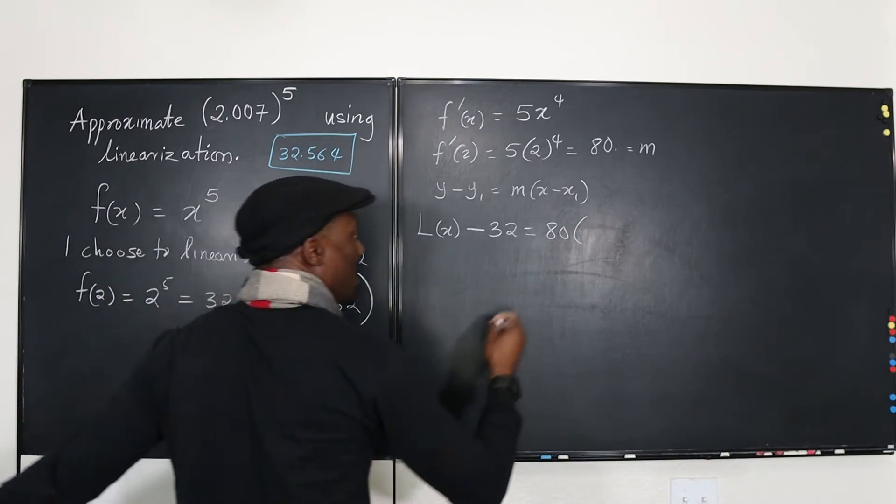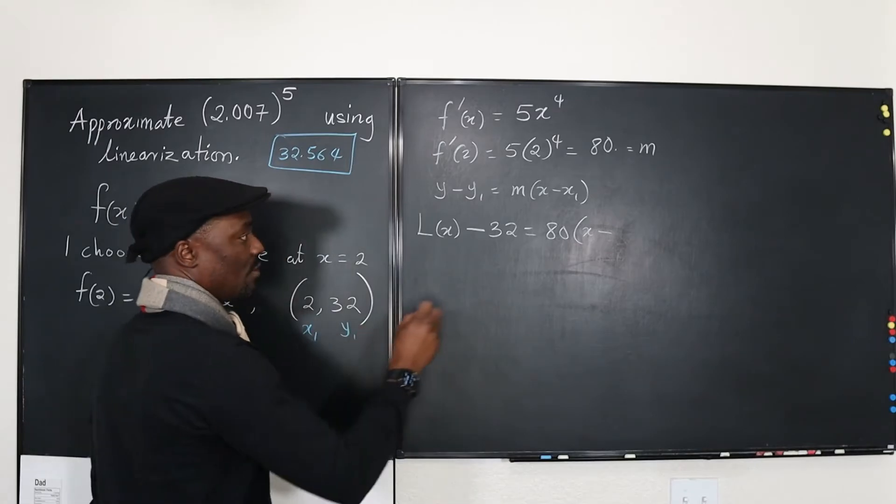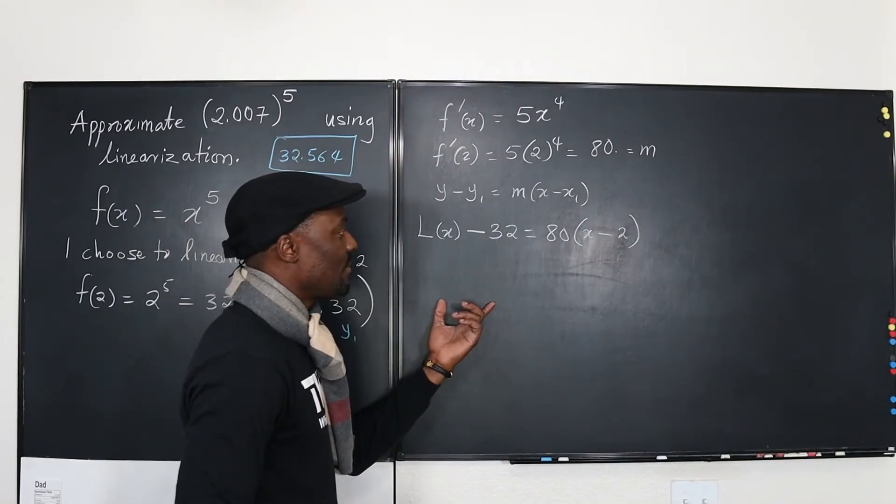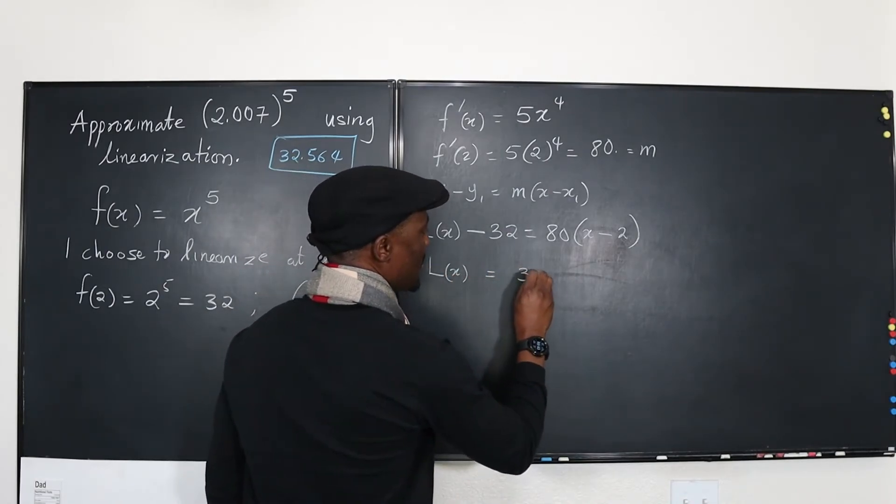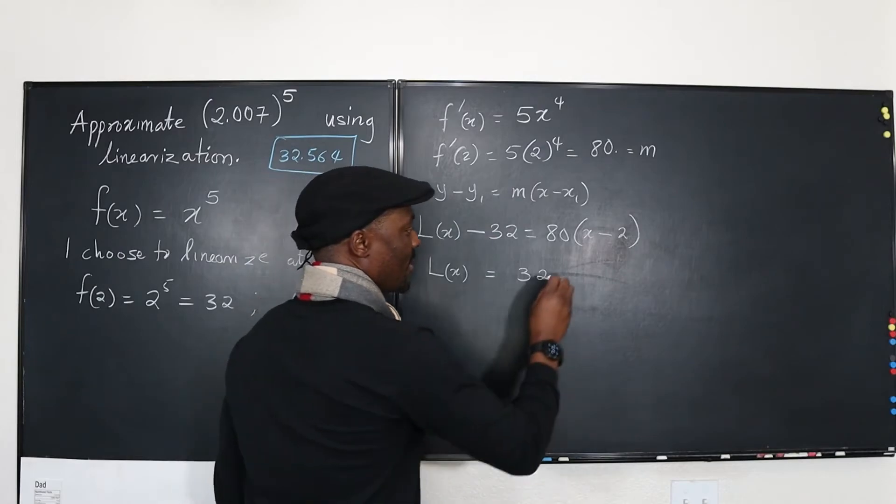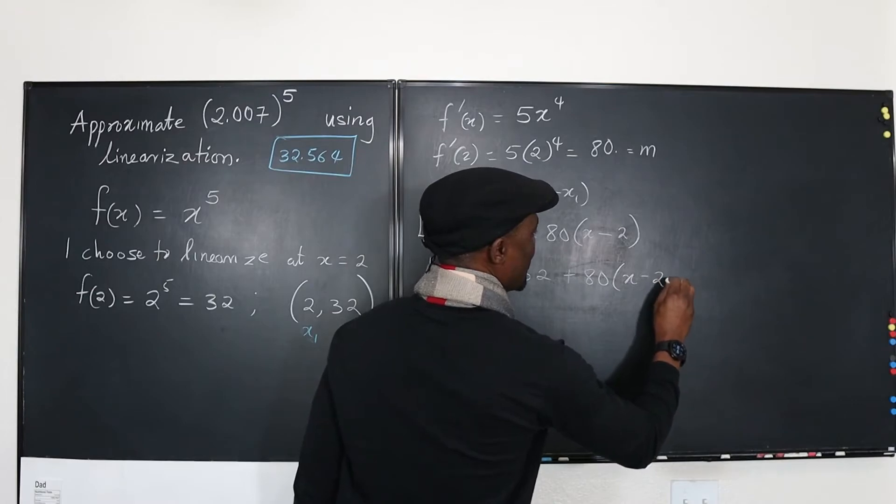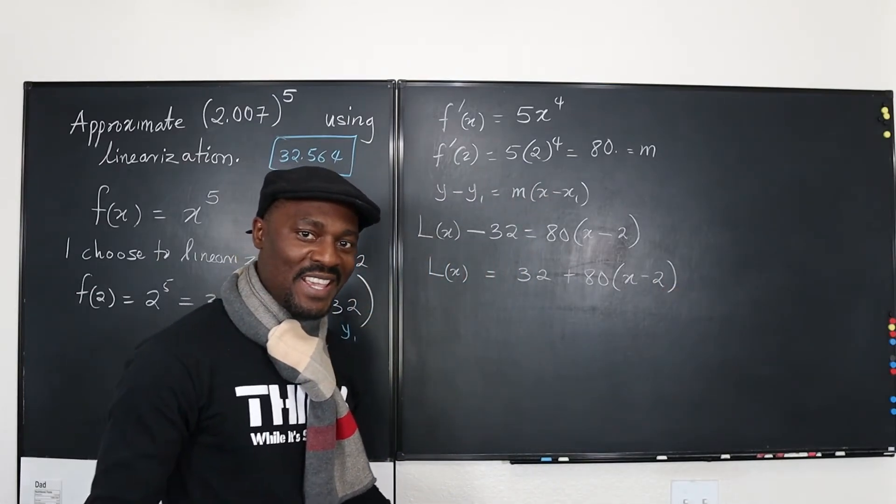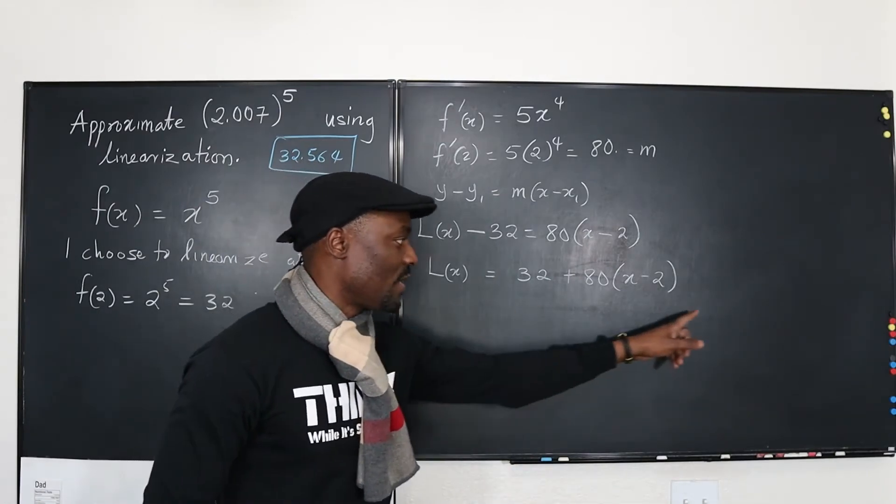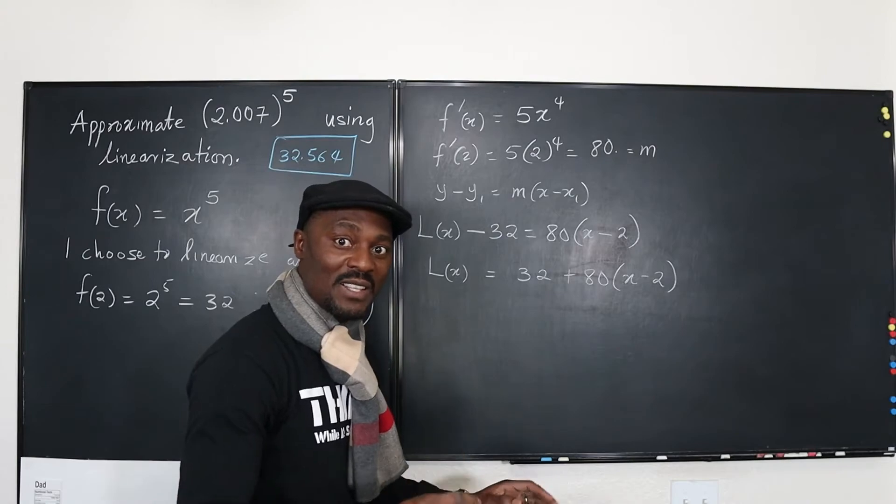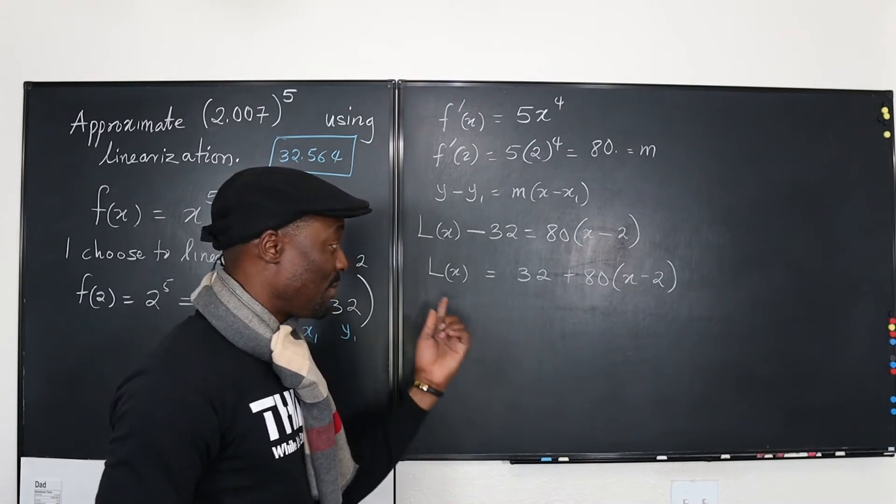So now we just have to take this here. And then you have the linearization of x is going to be 32 plus 80 times x minus 2. I want to take a break here. Because for most people who have the formula memorized, this is what they have memorized. And let me write the memorized formula version of this. I don't have the formula memorized, but I can see it.